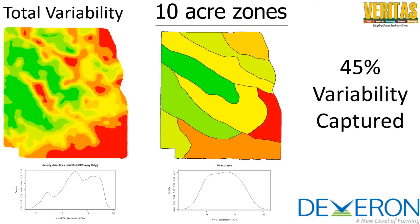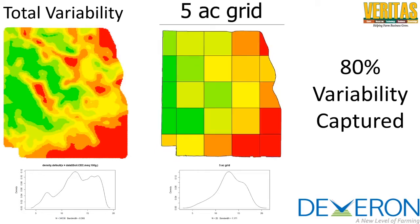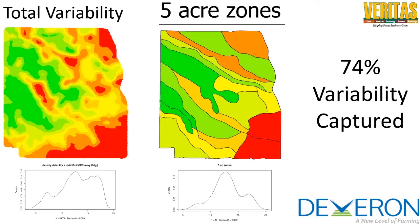Maybe you're not convinced that 45% is enough variability to capture for this field. Let's go to a 5-acre grid. We've just gone from 45% to 80% — by going from that 10-acre grid or zones to a 5-acre grid, you've captured 80% of the variability. That's pretty impressive. You could also do a 5-acre zones approach — that gives you 74%. You've dropped a little bit of that variability because of how the zones are made.